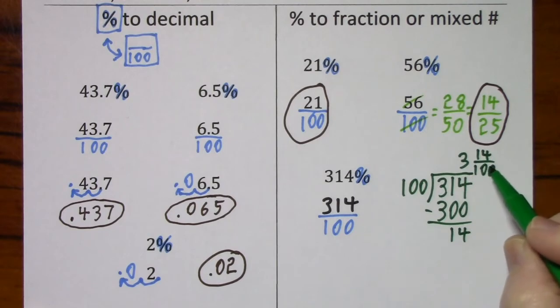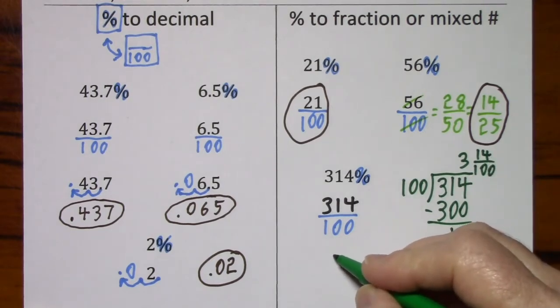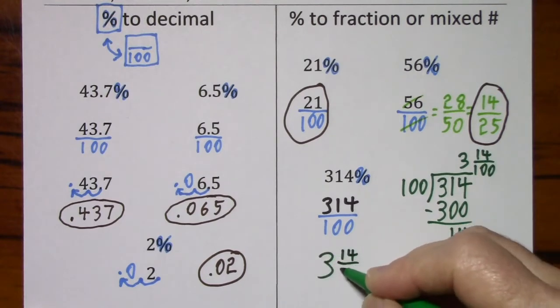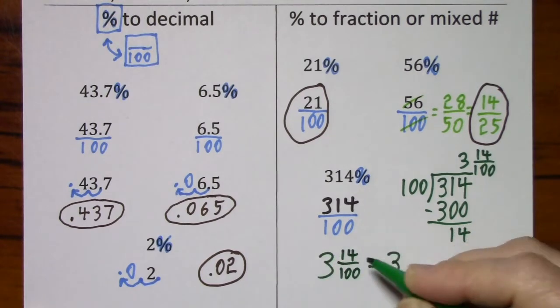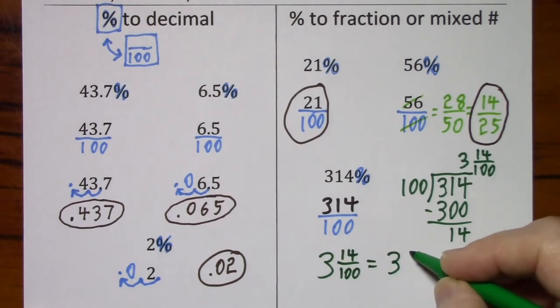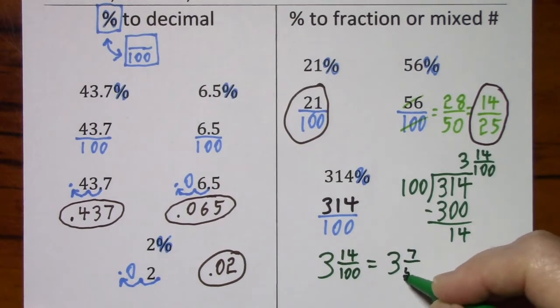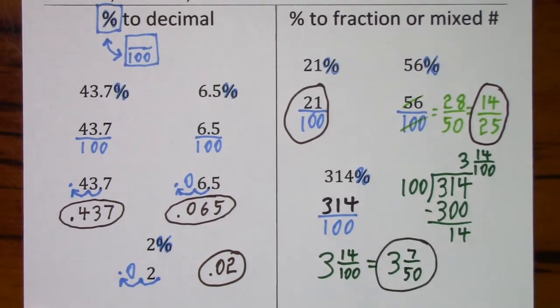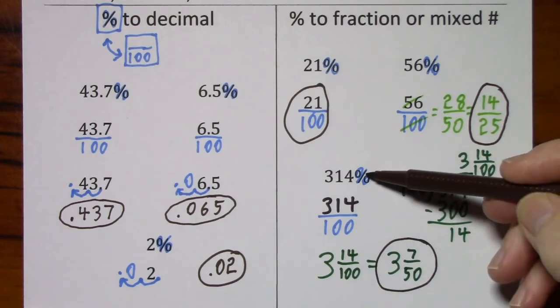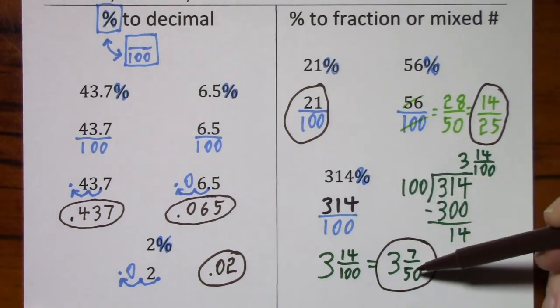And keep your denominator. This will simplify more, common factor of 2. So we go from 3 and 14 hundredths to 3 and 7 fiftieths. Again, these may look very different, but it's the same value.